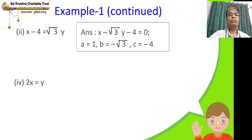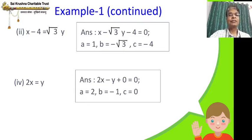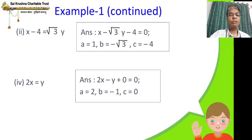2x = y. Again pause the video, write your answer, and then wait. There may be a small confusion — where is c? There is no constant. The answer is 2x − y + 0 = 0. If c is not given, we can substitute c with 0. Only a and b should not be simultaneously 0; c can always be 0. So a = 2, b = −1 — because y has been brought from RHS to LHS the sign becomes negative — and c = 0.